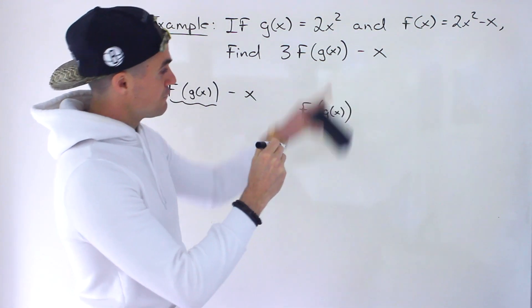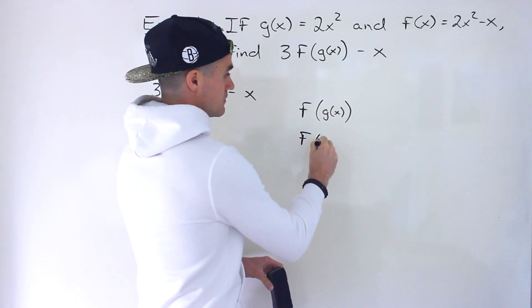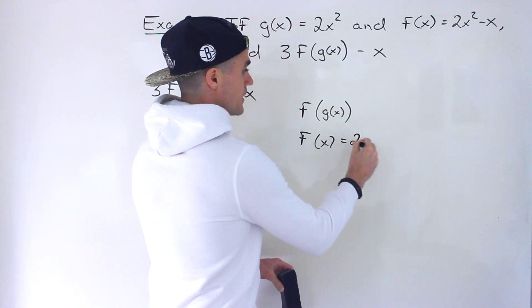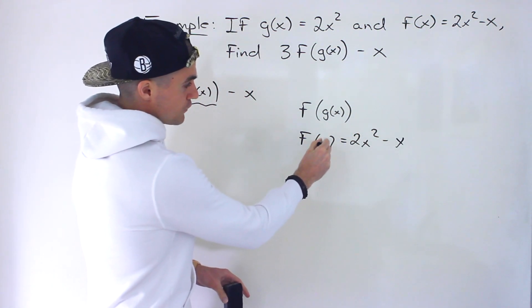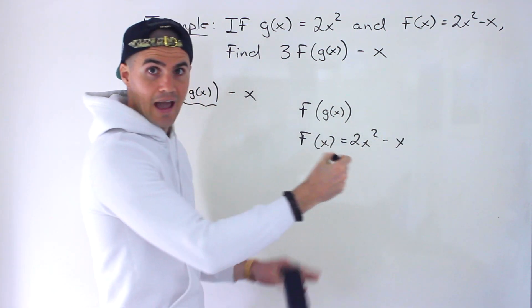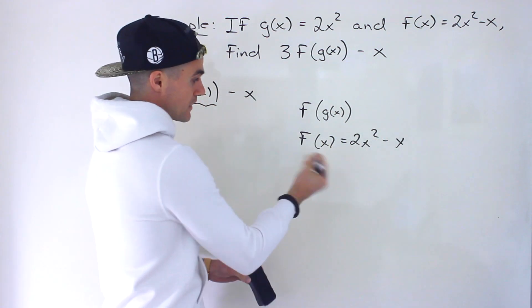Well notice that f of x equals 2x squared minus x. So anything we plug in for x here, we're going to plug in for the x in the actual expression for f of x.